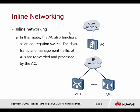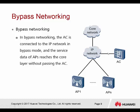In inline networking, traffic has to pass through the controller before accessing the network. The uplink is on the AC controller. In bypass mode, the AC controller is attached beside the core switch — just attached beside. They only use the CAPWAP tunnel to manage all the APs. But user data can be forwarded based on the forwarding mode selected: direct forwarding or tunnel forwarding. With direct forwarding, all user data goes from the AP directly to the network without returning to the controller.